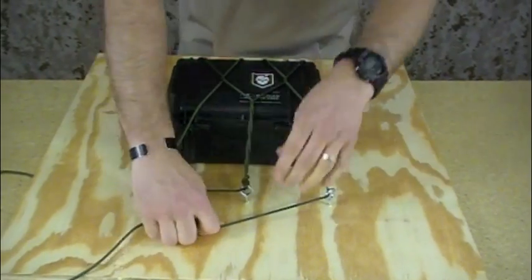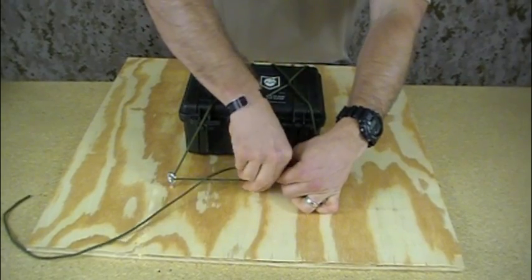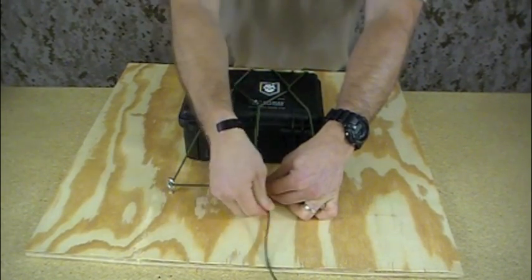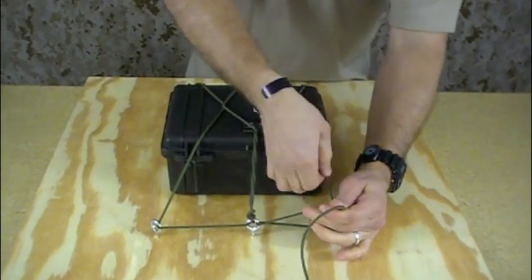Now to secure this, we're going to come back to our starting eyelet. Come back through here. And secure it. Now at this point, before you tie it off, you might want to do another adjustment. Make sure things are nice and tight like you like them.